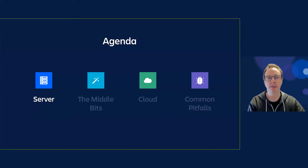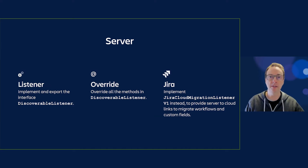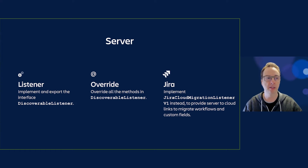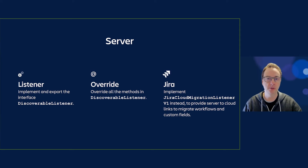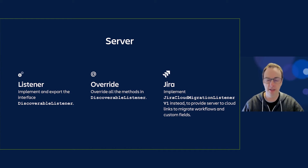Let's look at the server side of things — specifically P2 plugins on server. For App Migration, you create a class and implement and export the interface of DiscoverableListener. There are four methods in that interface which you need to override. If you're dealing with Jira specifically, you can implement the Jira Cloud Migration Listener v1 instead, which includes four main methods and two extra ones that link and migrate workflows and custom fields.